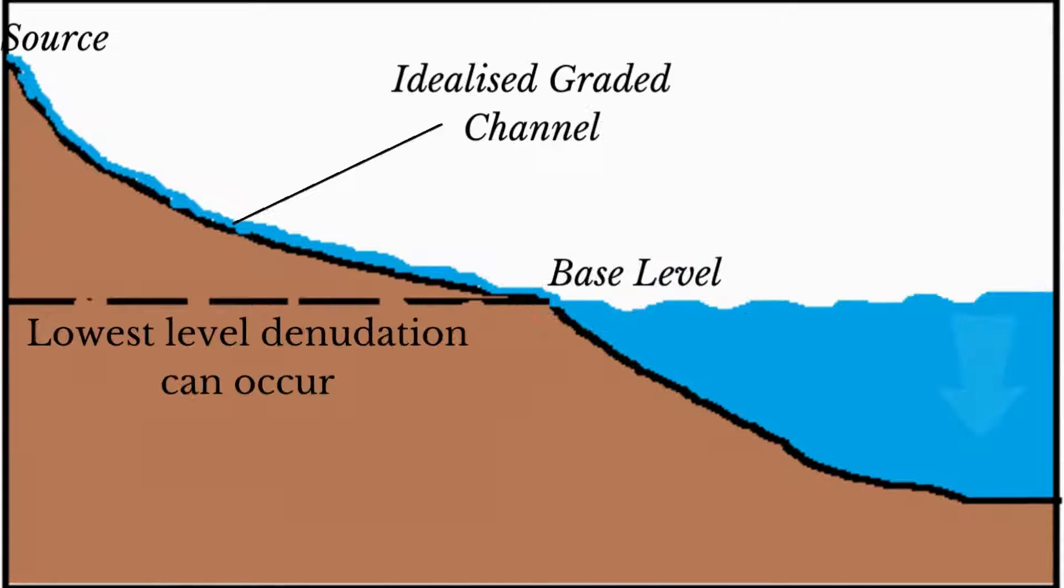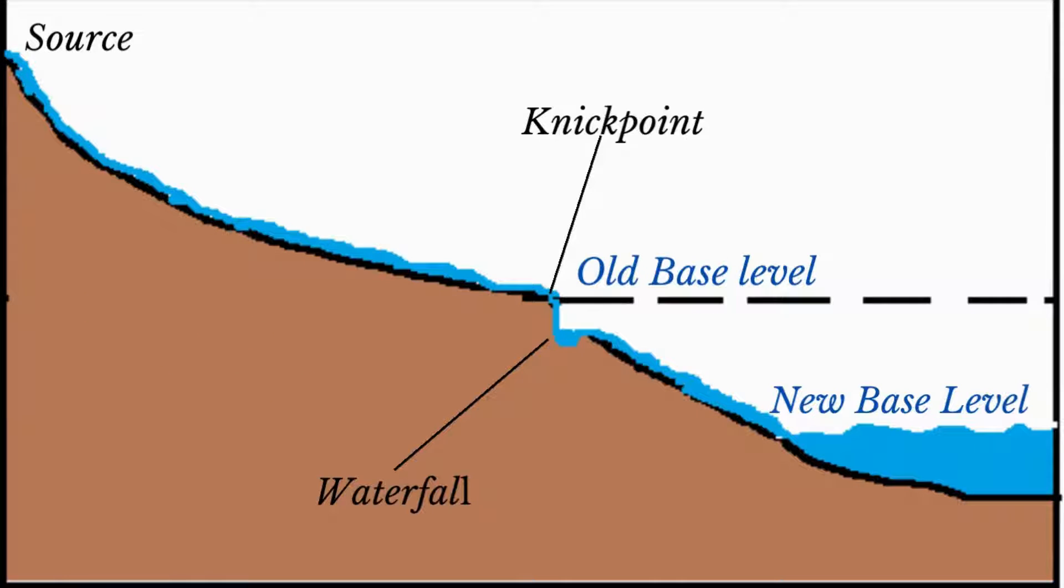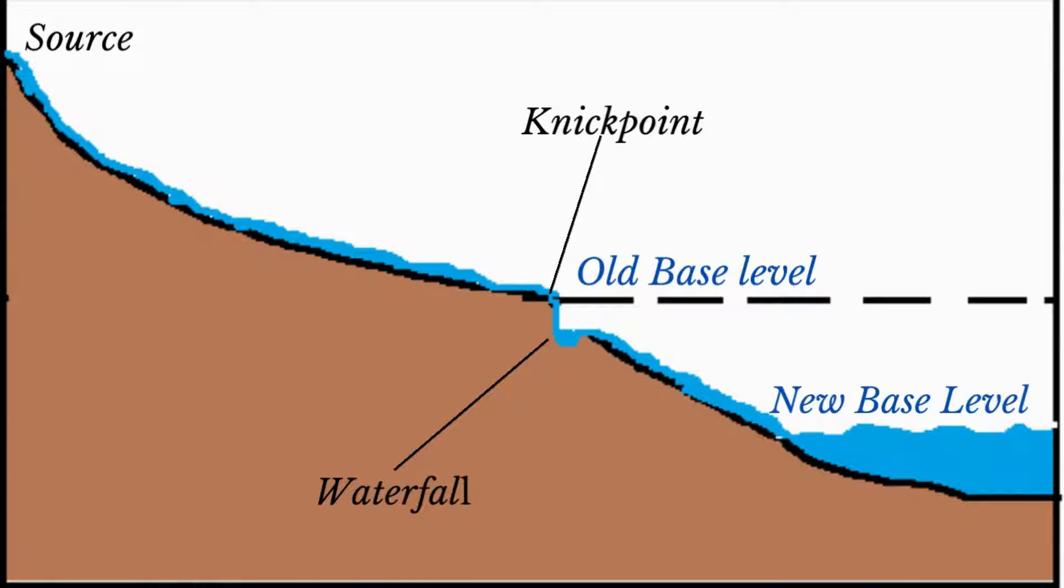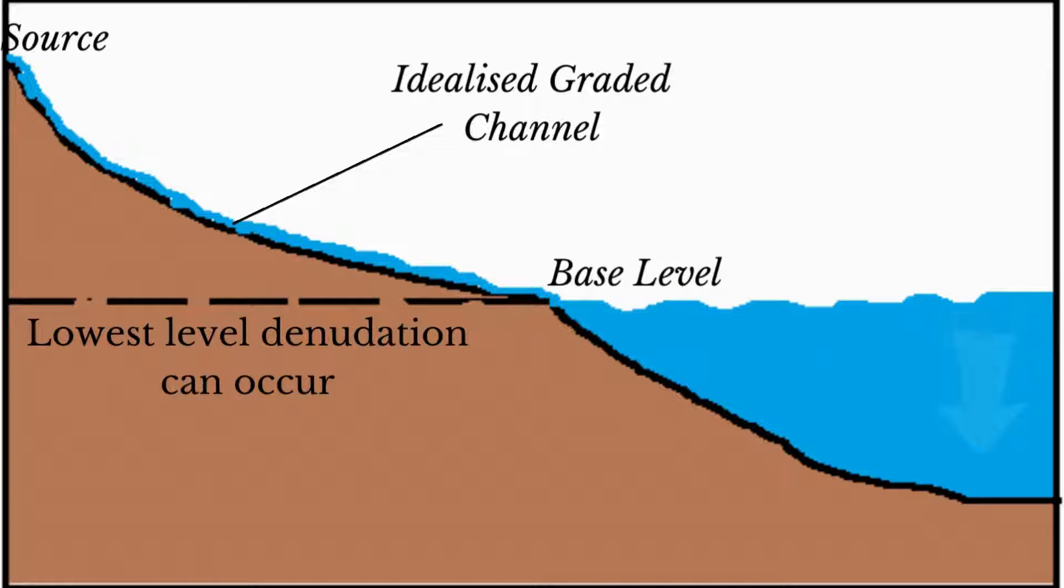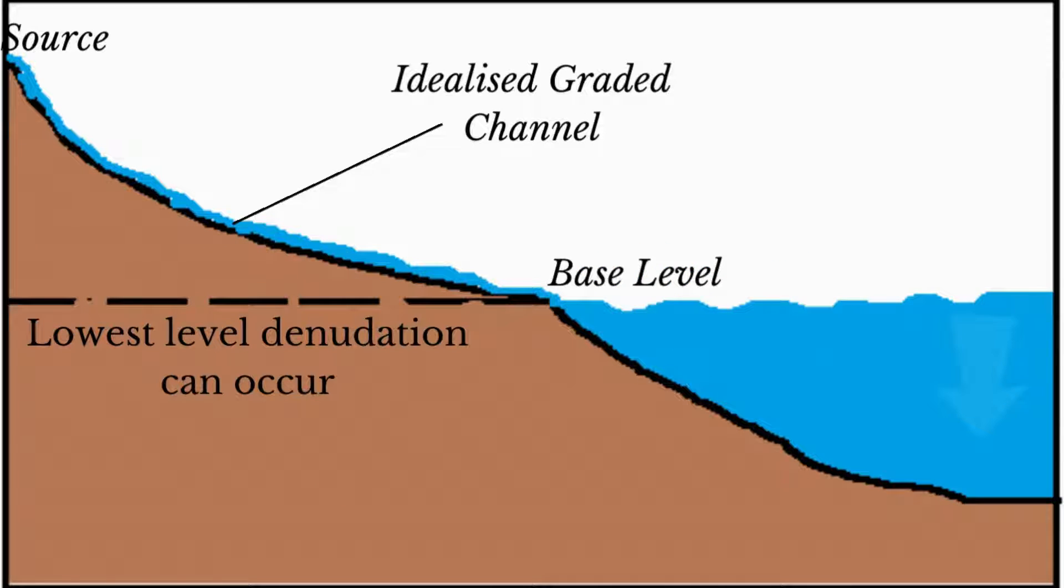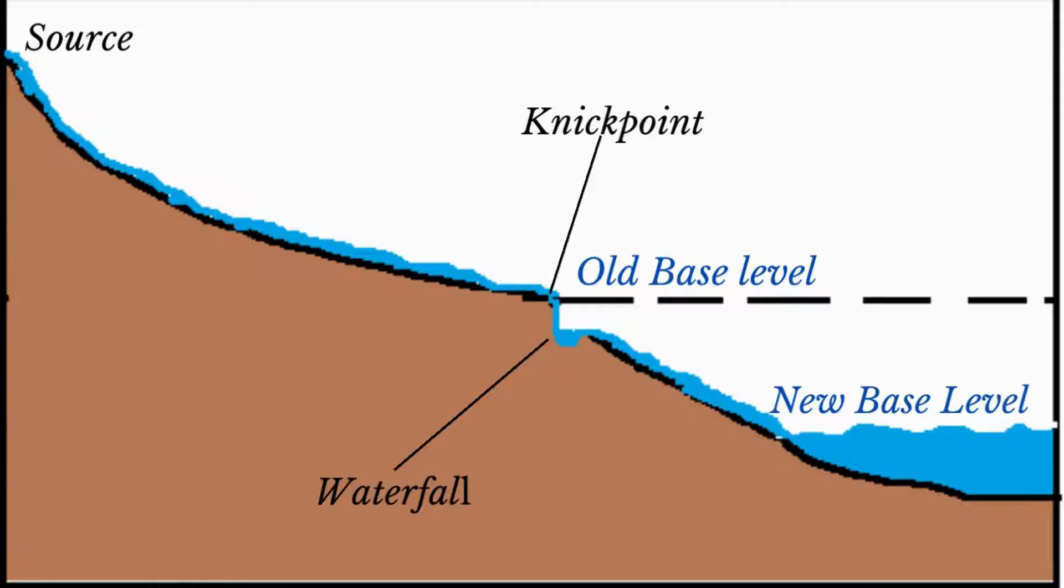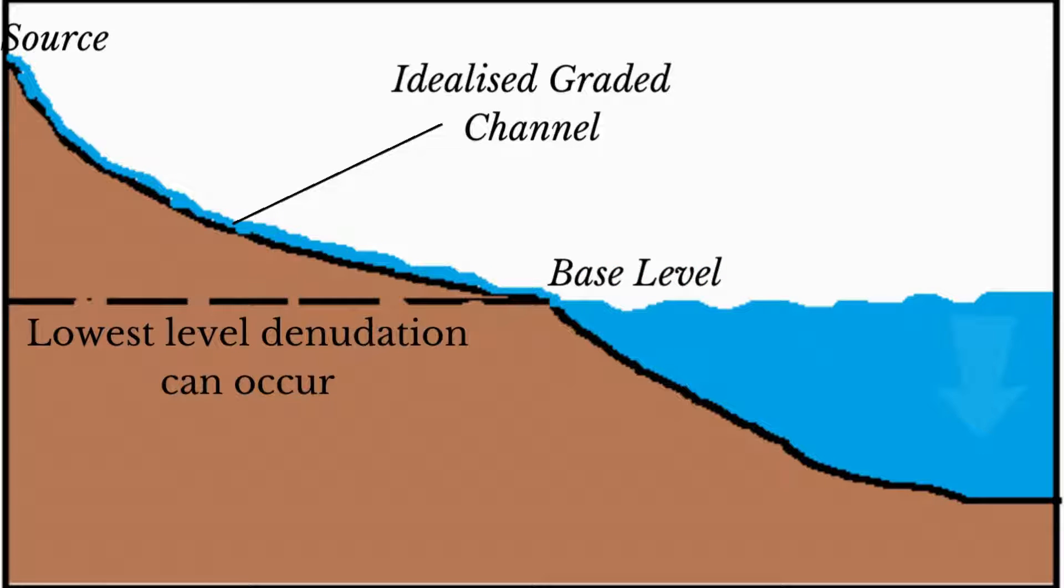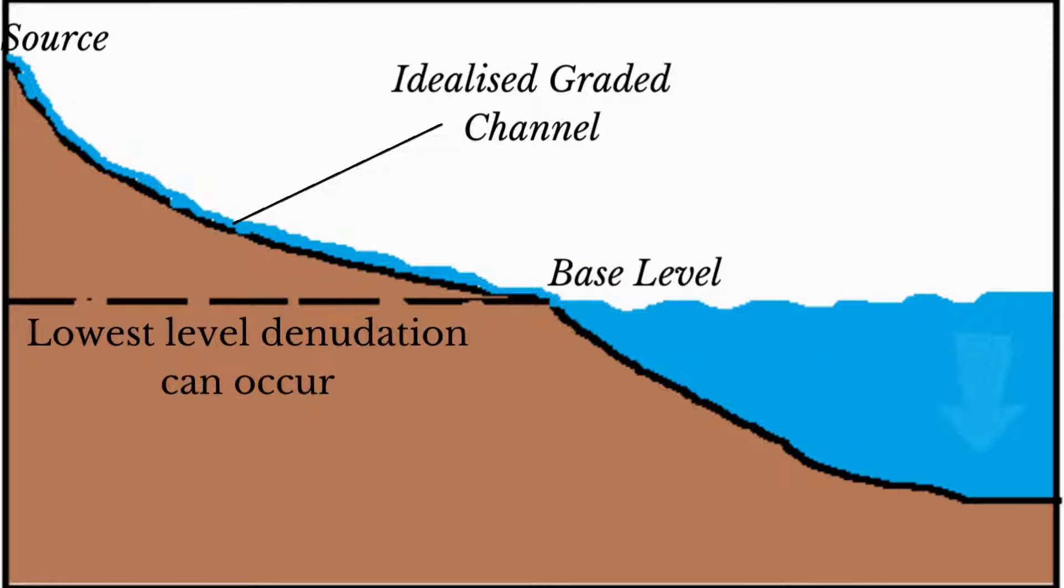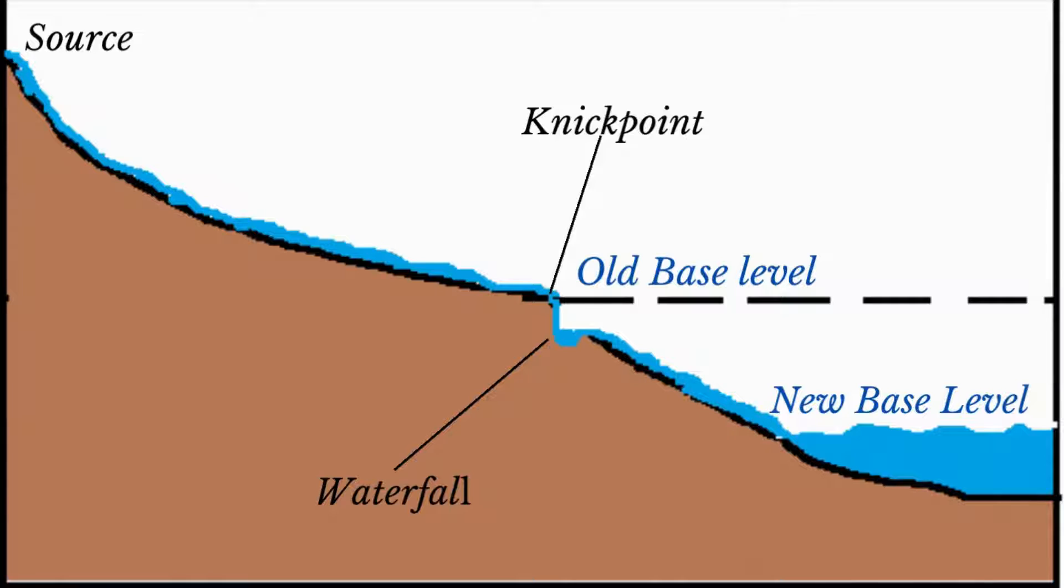In time, the river will cut downwards and backwards and the waterfall will retreat upstream. As the waterfall retreats, a gorge will develop. The nick point, usually indicated by the presence of the waterfall or even rapid, is a sharp break of slope in the smooth, concave, long profile of the river. It marks the maximum extent of the newly graded profile. At this point, vertical erosion associated with rejuvenation is at its greatest.